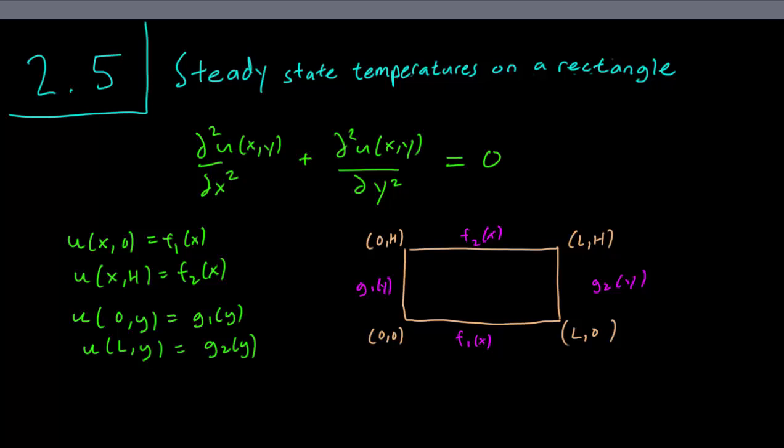Since we are concerned with two-dimensional steady state temperatures, we have to use the Laplace equation, written as so, and we have these four boundary conditions. These tell us what the temperature is on the four sides of the rectangle.